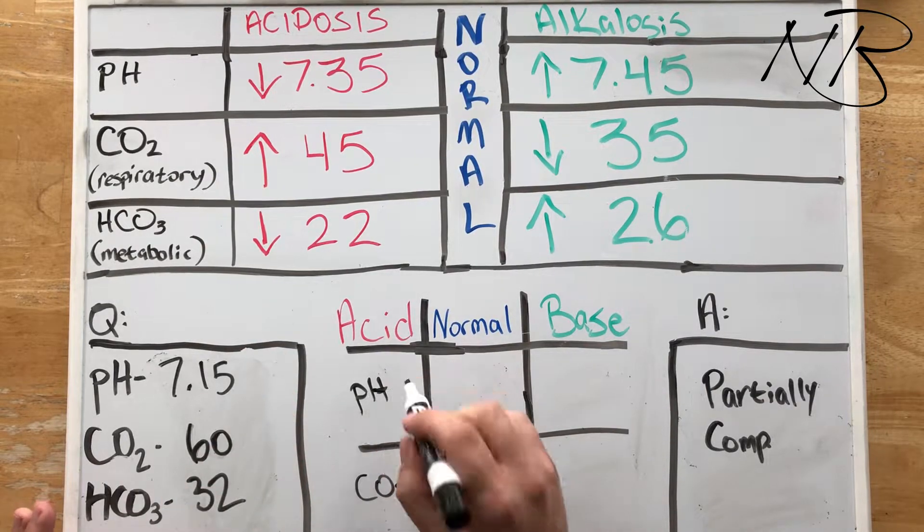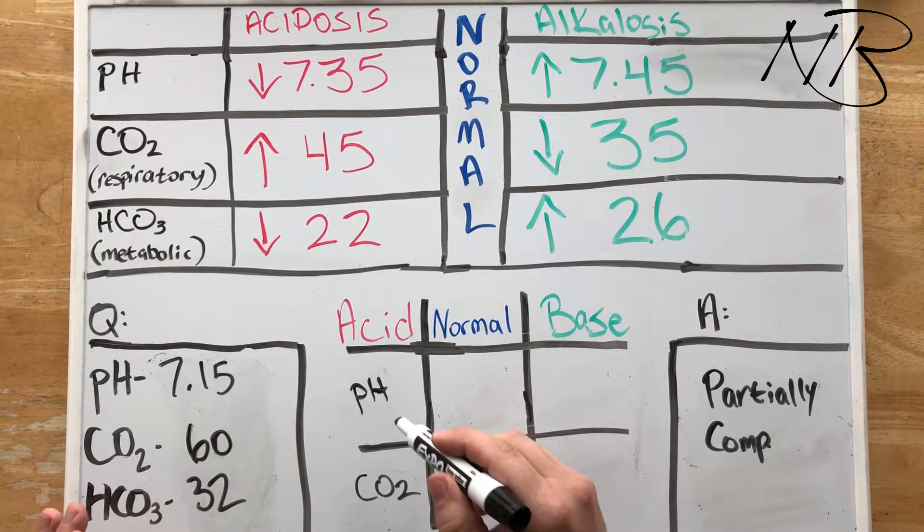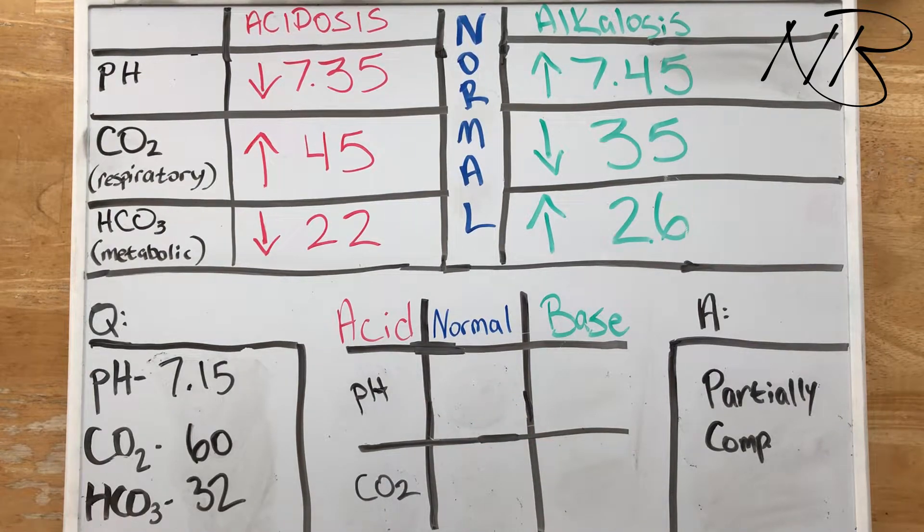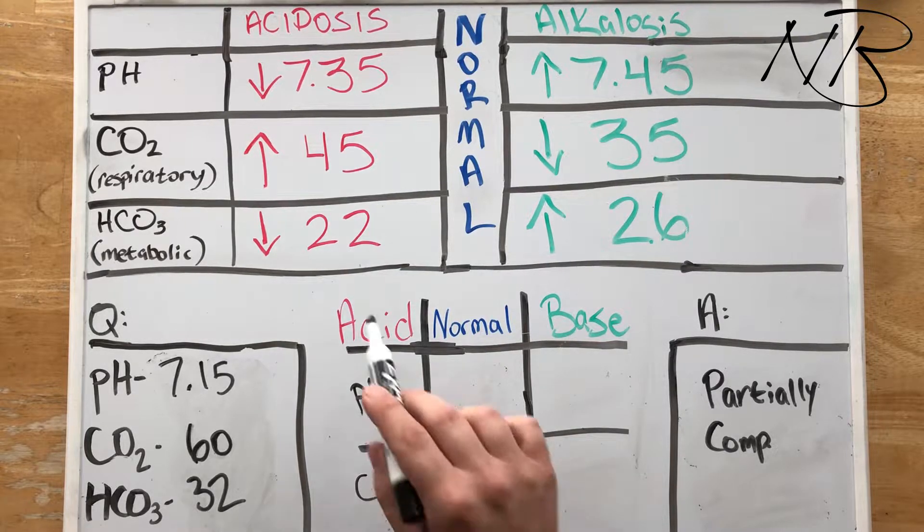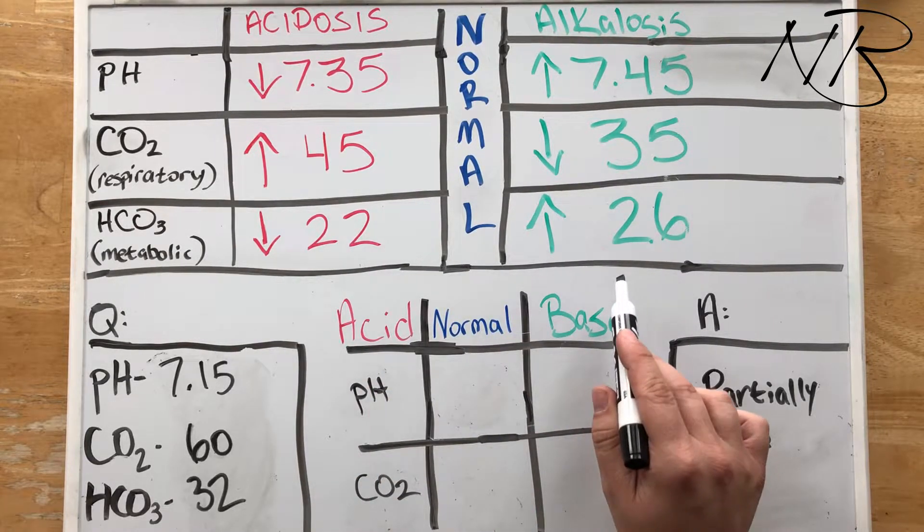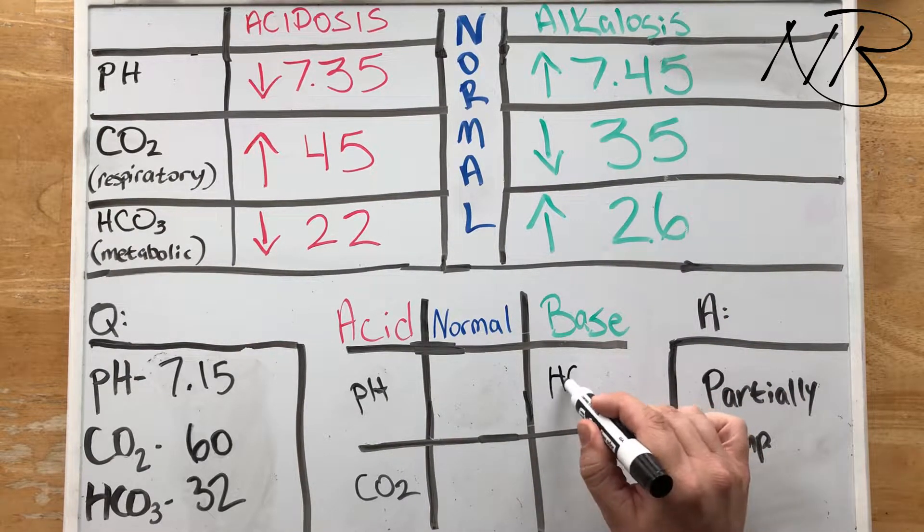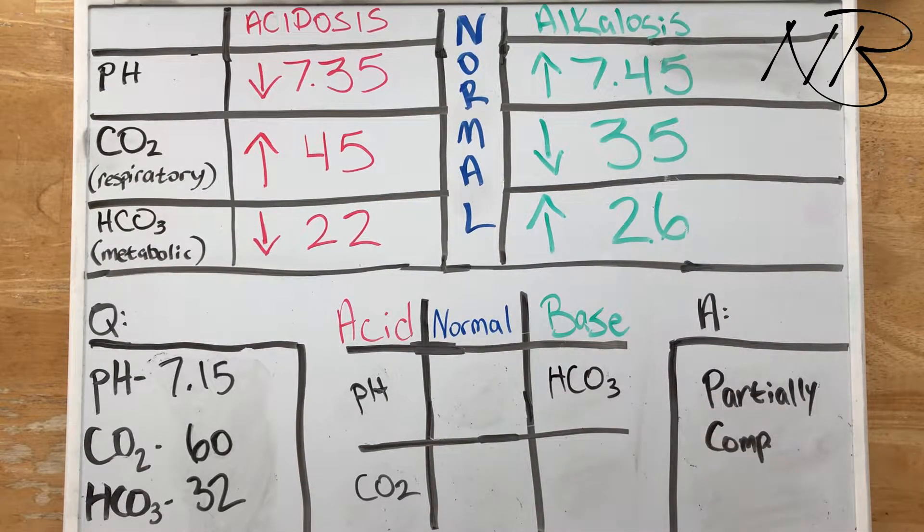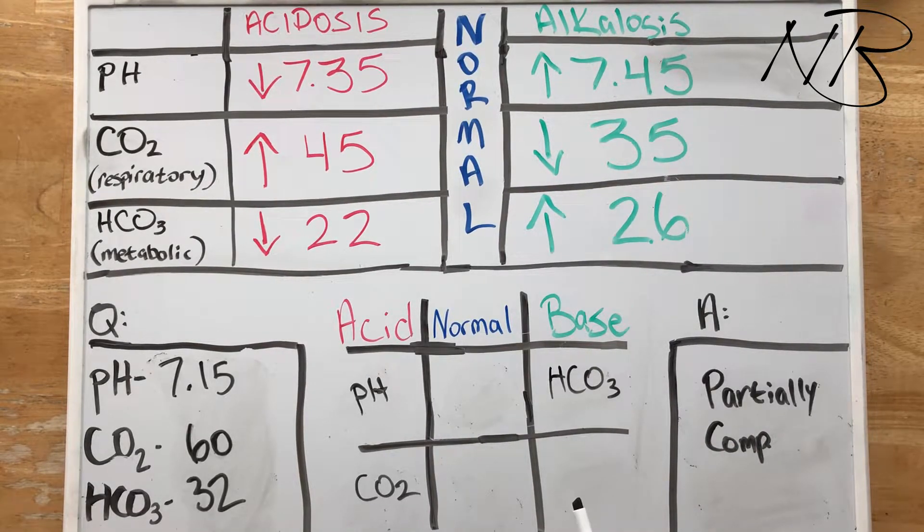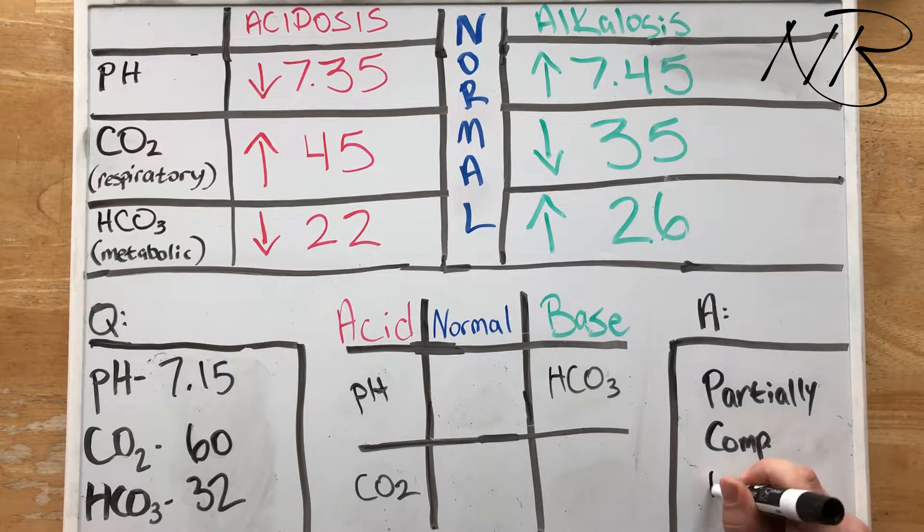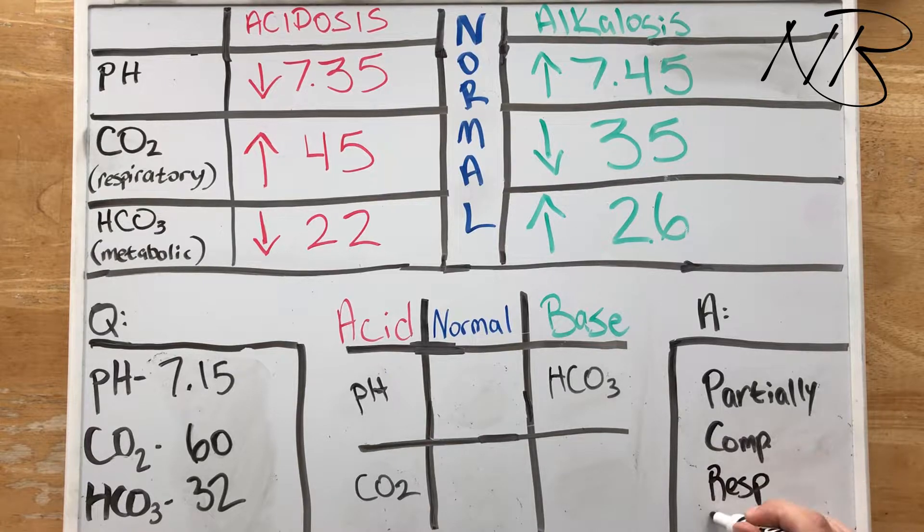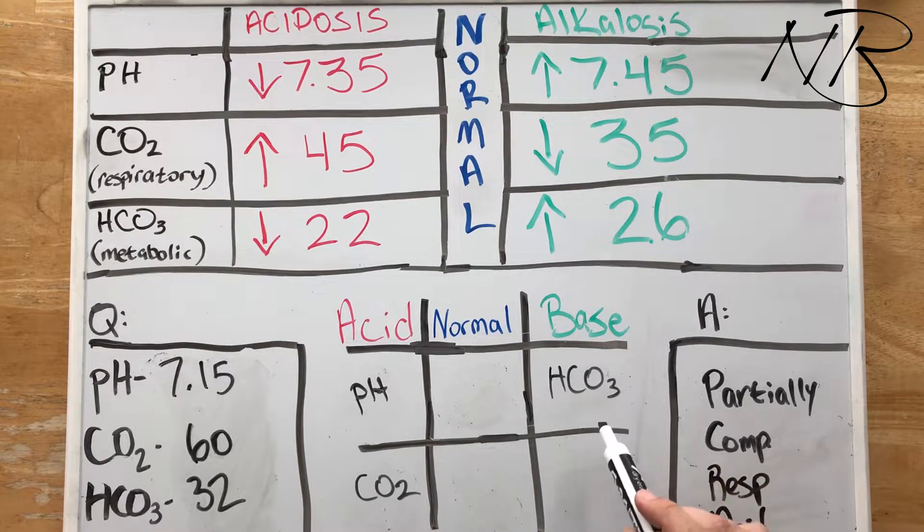Now right here from the bat, if you got into the hang of things from those last five questions, you might say I don't even need to look at the bicarbonate. I already know we have respiratory acidosis. But look at every piece of information that you're given. Bicarbonate is 32. That's not normal. That's well above 26, falling in the basic column. So we're going to put this over here in the basic column. What we do have here is we do indeed have respiratory acidosis, but it is partially compensated.